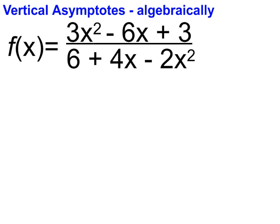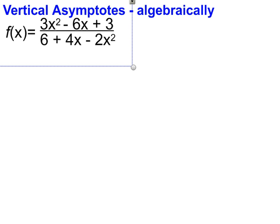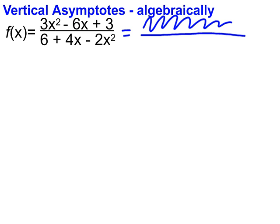Algebraically, I'm going to do some things that should look quite familiar. We've done them before when searching for domain and range and doing various other things. But let's start by factoring the bottom. When we're looking for vertical asymptotes, we're going to find that the denominator is really where our focus lies. There are some rare exceptions where the numerator really comes into play, but I'll save that for another day. Let's focus on the denominator, and I'm just going to put a squiggle here as a placeholder for the numerator.